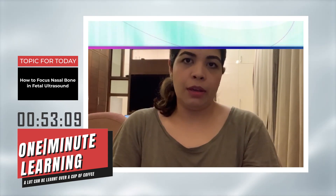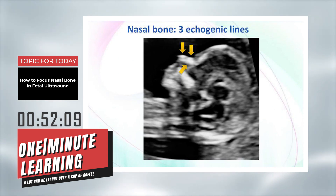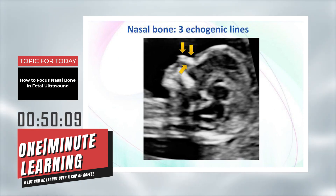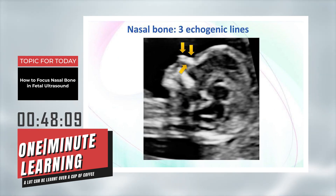Nasal bone in the first trimester serves as a marker for various aneuploidies, especially trisomy 21. We all know about the mid-sagittal view and the equal-to sign to determine the nasal bone.